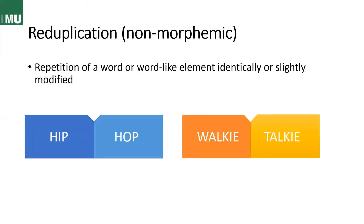And last but not least, we have reduplication, another non-morphemic word formation process where a word or word-like element is repeated in an identical or mostly slightly modified form, as we can see with 'hip-hop' or 'walkie-talkie.'